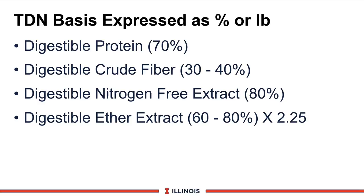Let's look at different ways to express energy content in a diet. The traditional way was called TDN, Total Digestible Nutrients. This measurement was expressed as a percent — for example, 70% TDN on a ration — or as pounds: 'I feed my cows 20 pounds of TDN.' TDN is calculated by summing up the percent or amount of digestible protein. A good figure is about 70% of the protein should be digestible, meaning the other 30% comes out in fecal and urine losses.